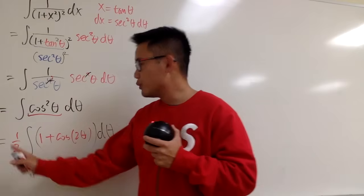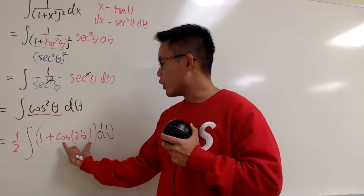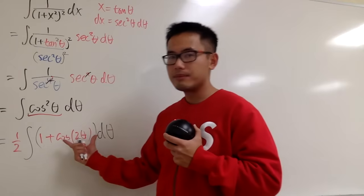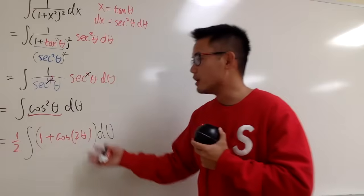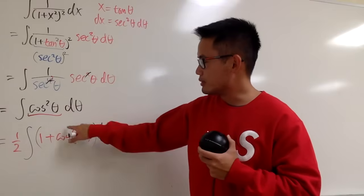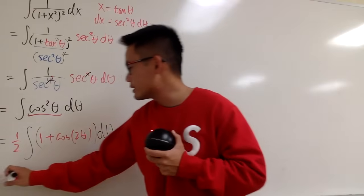And once again, if you look at the red part, 1 half times 1 plus cosine 2 theta, this is equal to cosine squared theta. So I just used an identity to reduce this right here, reduce the power, because now I can integrate this.